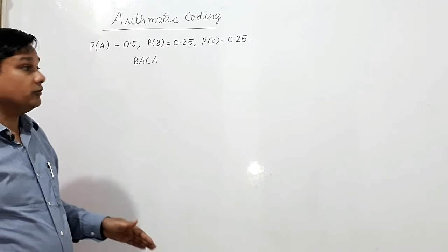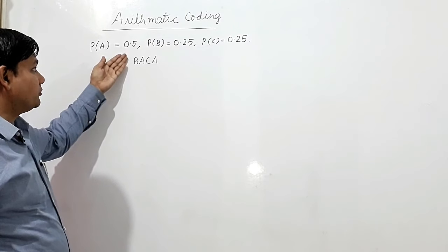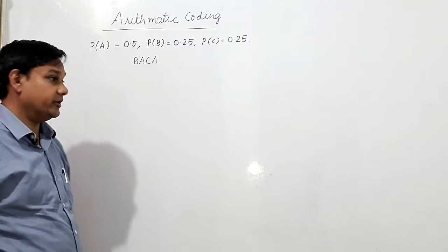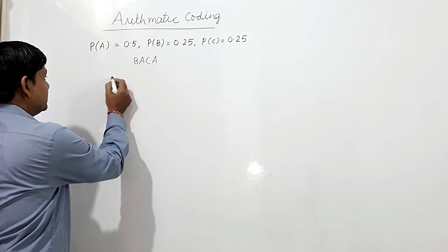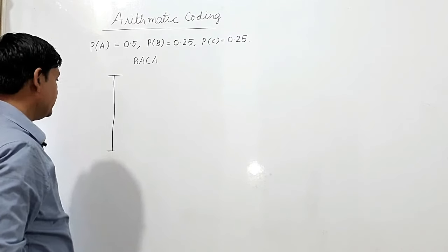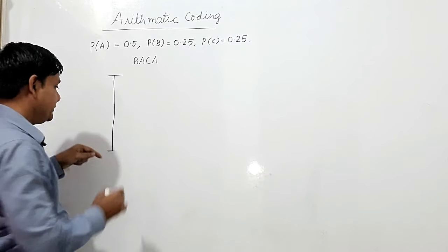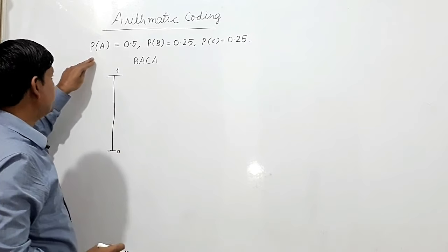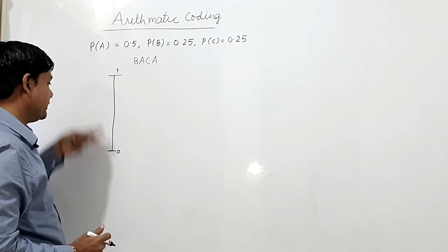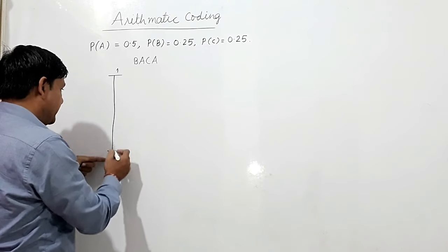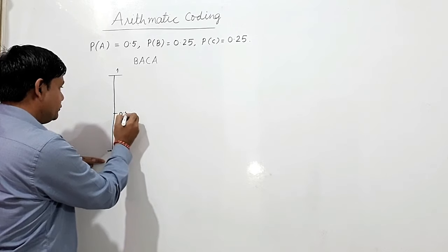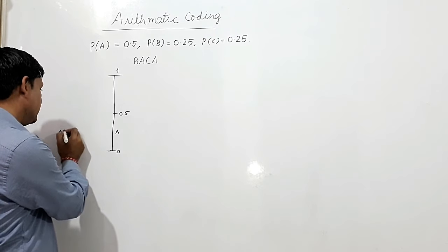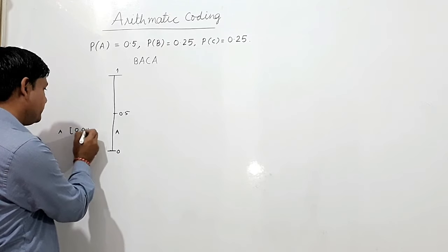Here we shall see how to find the arithmetic code if probability of symbol A is 0.5, probability of symbol B is 0.25, and probability of C is 0.25. We have to find the arithmetic code for the sequence BACA. We shall arrange these symbols in a frame where probabilities lie between 0 and 1. Since probability of A is 0.5, A is in the closed interval from 0 to 0.5.